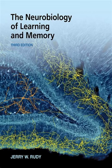Key points covered in The Neurobiology of Learning and Memory include: 1. Neural Substrates of Learning and Memory. The book examines the brain structures and neural pathways involved in learning and memory. It discusses how information is processed and stored, encompassing regions such as the hippocampus, amygdala, and neocortex.